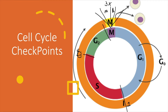At checkpoint one — the G1/S checkpoint — the cytoplasm-to-nucleus ratio is checked. We want to make sure we have all the enzymes needed for DNA replication. If all these things are ready, we get a go signal that pushes us to S phase. At checkpoint two, we look at whether proper DNA replication took place — did proper DNA synthesis occur? This is the main thing checked there.